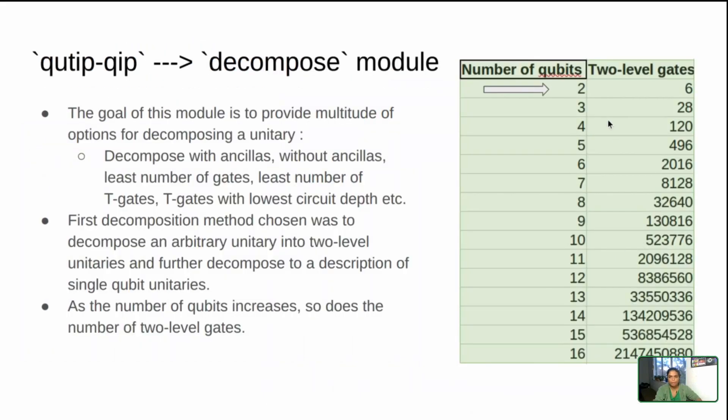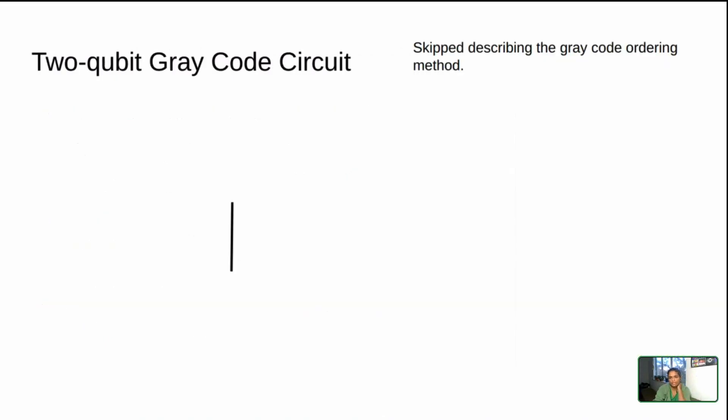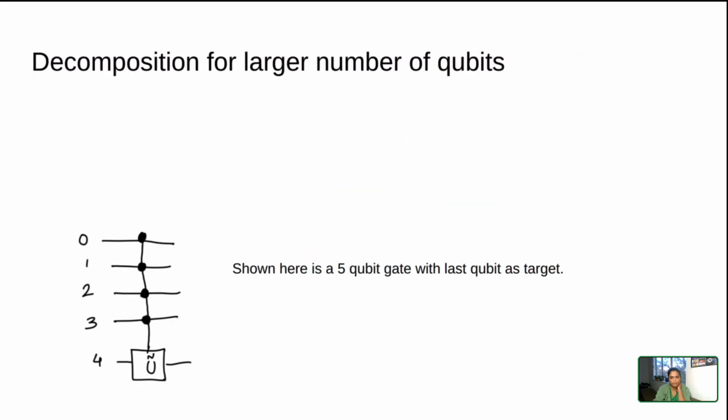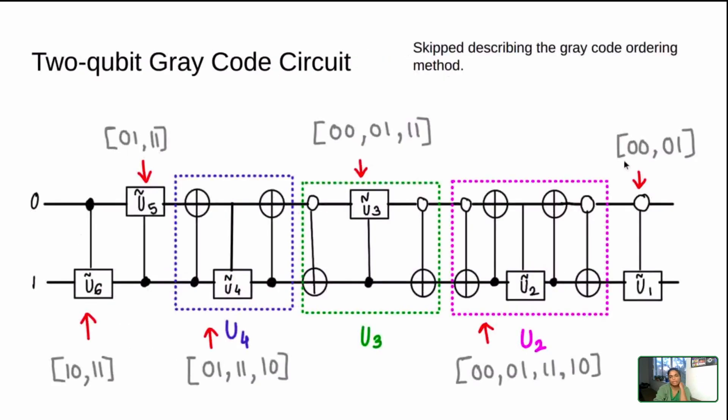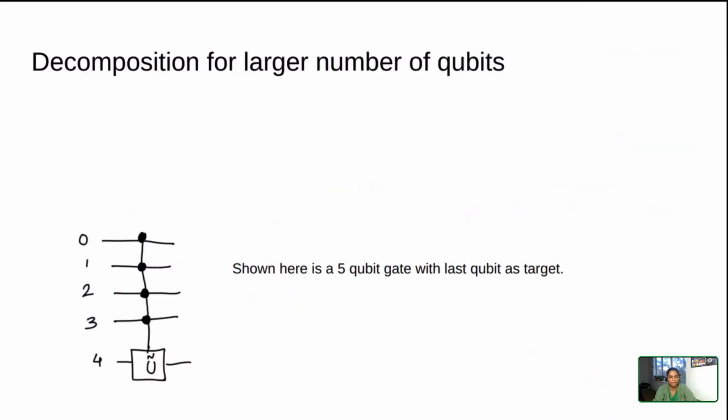Going back to my previous slide when I was talking about the number of gates needed for a two level, the number of gates needed for decomposing a qubit gate, for two qubits this is an example circuit. Each of these blocks are all the two level gates, and I do want to be able to implement a circuit like this, hopefully sometime soon when I complete the module.